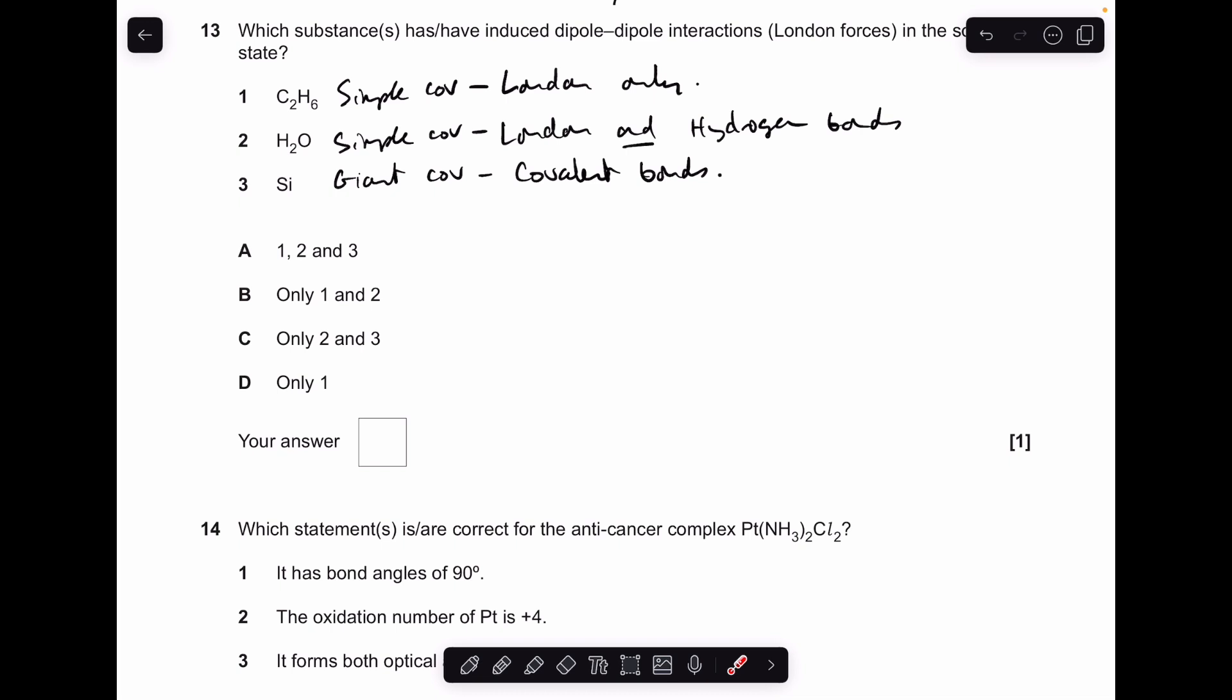Moving on to number 13. So we've got to think about what type of structures these have got. So C2H6 ethane is a simple covalent structure. It's actually non-polar as well. So that will only have London forces in the solid state. H2O, another simple covalent structure, but this one's obviously got hydrogen bonds between its molecules. So we've got London and hydrogen bonds there. Silicon is a giant covalent structure. So it's got covalent bonds between its atoms. So 1 and 2 only. So B was the answer.